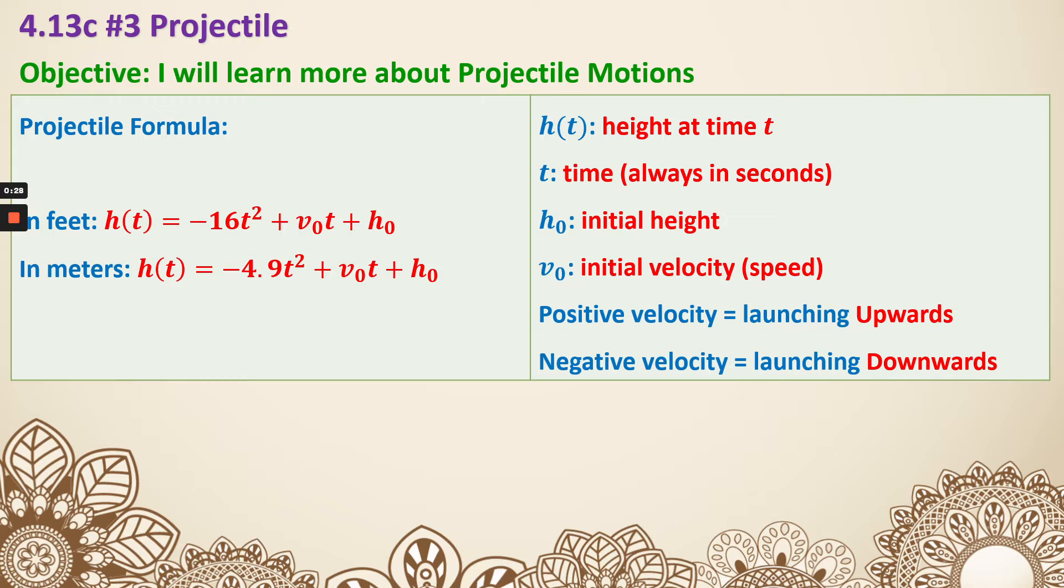h sub-zero is initial height, v sub-zero is initial velocity, positive velocity is going to be when it's launching upward, and negative velocity is when it's launching downward.